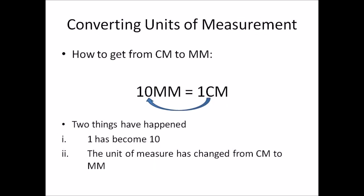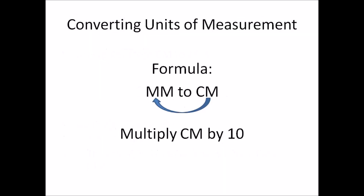In this example, just through observation, if we had to go back from centimeters to millimeters, you can see two things happening: the number 1 centimeter becomes 10, and the unit of measure changes from centimeters to millimeters. To convert centimeters back to millimeters, all you need to do is multiply the centimeters by 10. It is as simple as that.